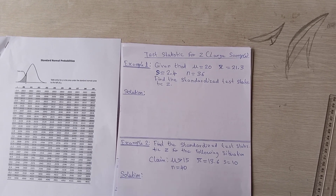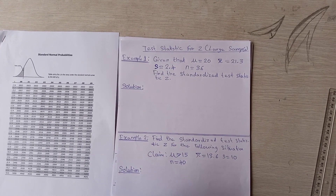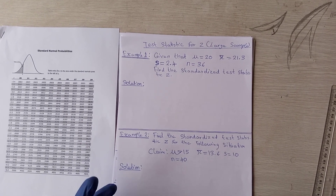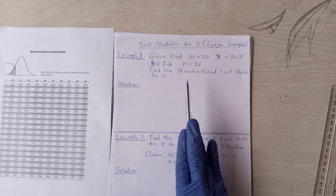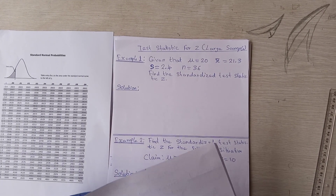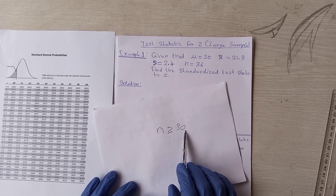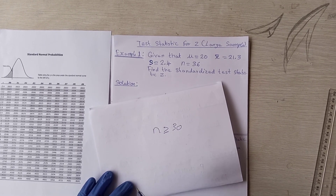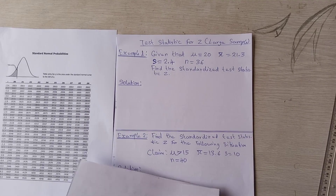How to compute z in a large sample. Even if you are not told it's a large sample or to find z, look at n. If n is greater than 30, you know it's a large sample. Whenever n is greater than or equal to 30, we say it's a large sample, and you are going to compute for z.